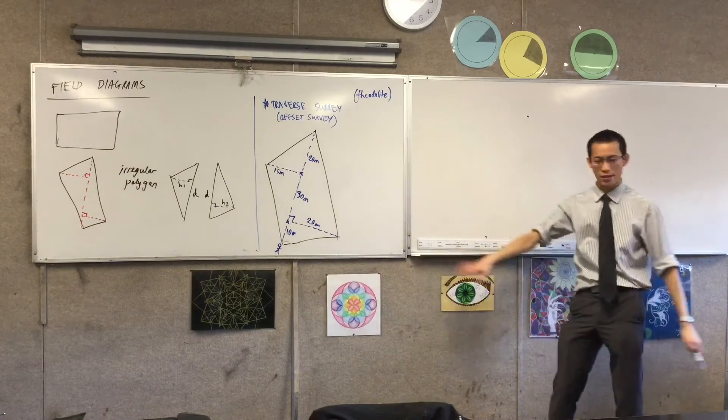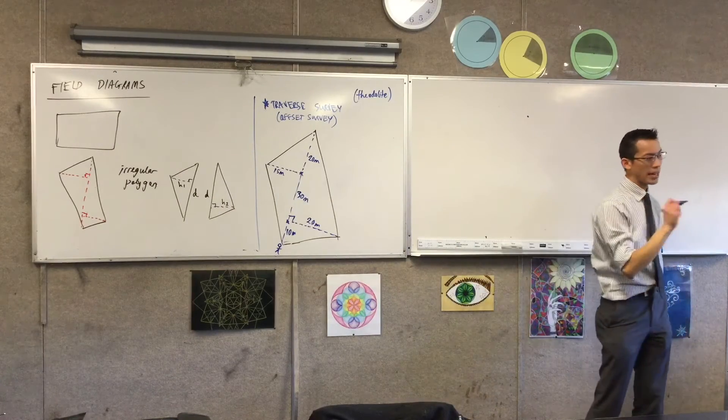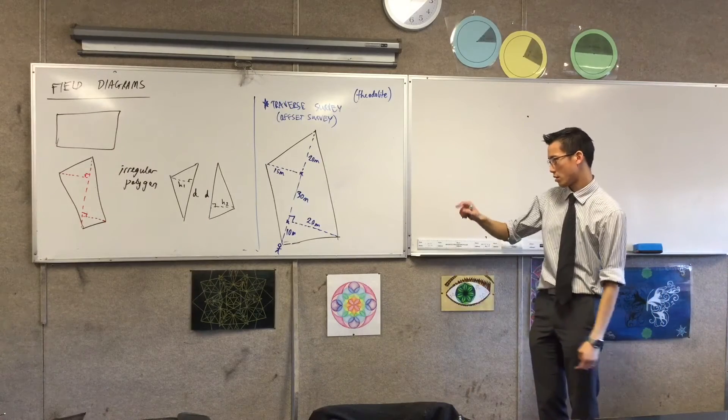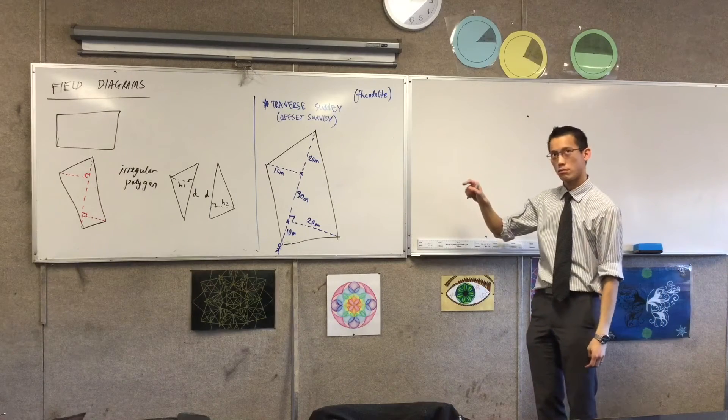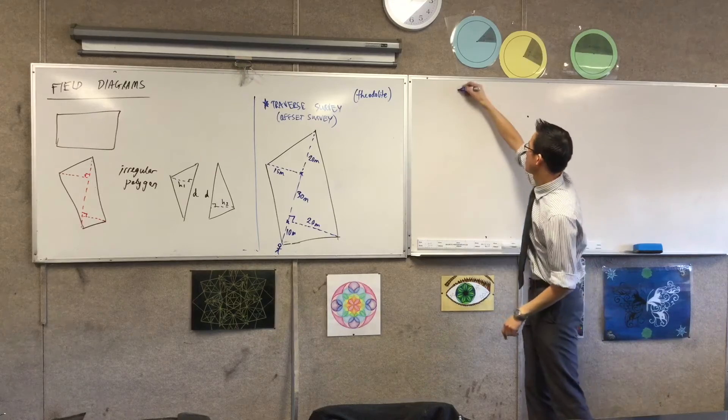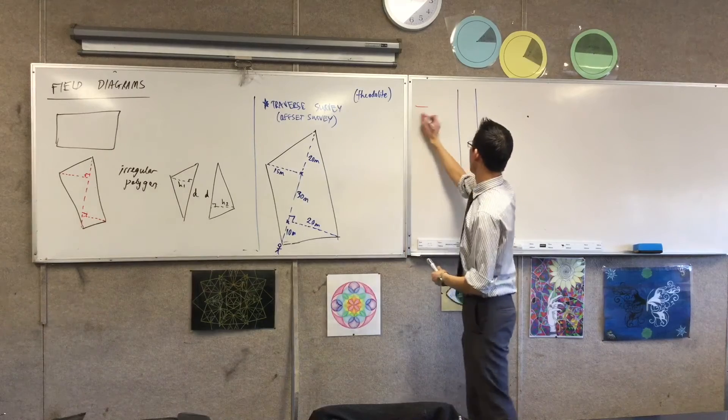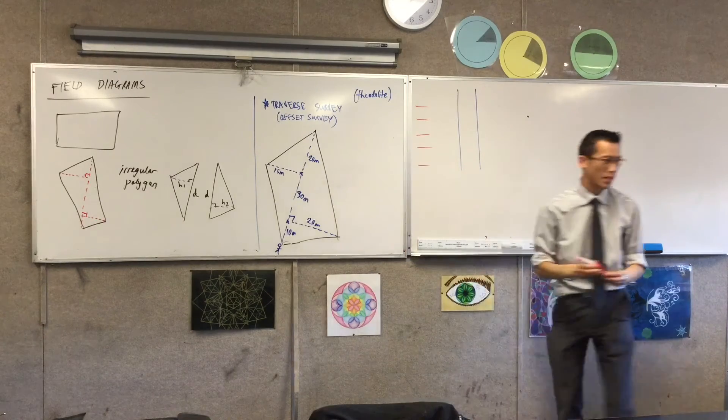I'd like you to draw for me two vertical lines, which have one, two, three, four, five rows. So something like this, and on your page, you're going to have, like, here are your lines on your page.